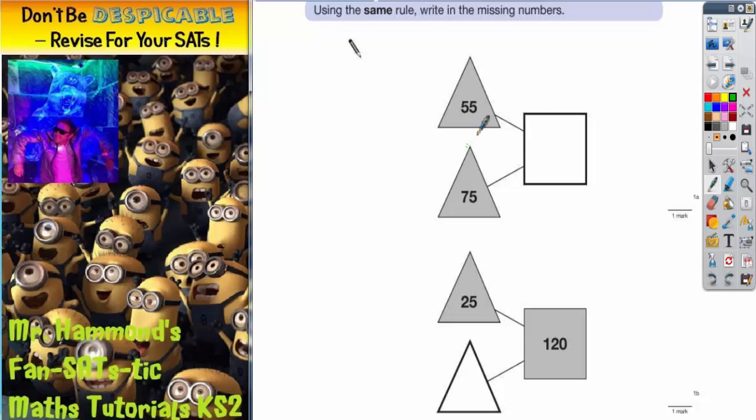Okay, so 55 plus 75 will equal whatever answer is in the square. So it's going to be a little column method, 55 plus 75, here we go.